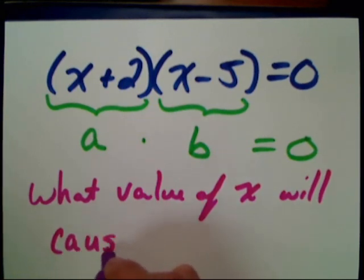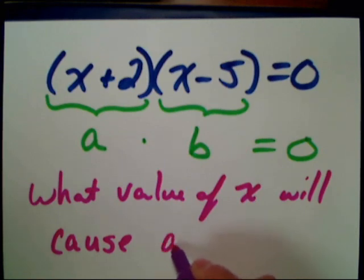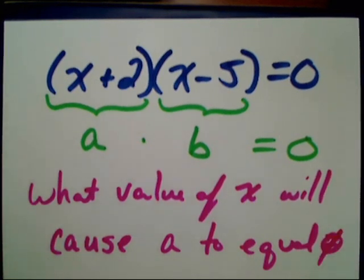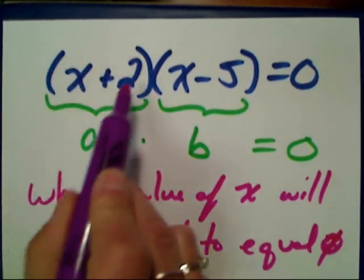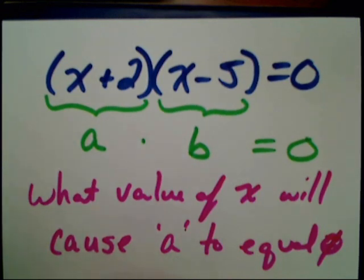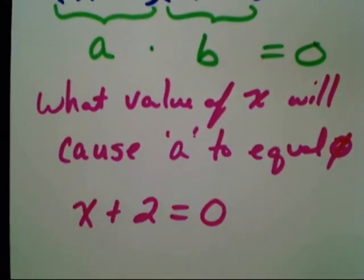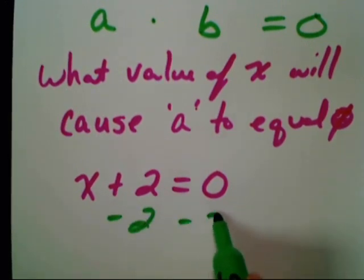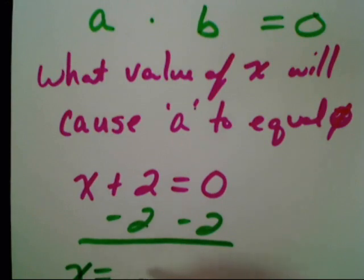So I need to ask myself: what value of X will cause my A to equal zero? Because A has to be zero. So what's going to cause x + 2 to equal zero? Now this is a little linear equation, and we should know how to solve this one. To get the X by itself, we simply subtract two from both sides. So X equals negative two.